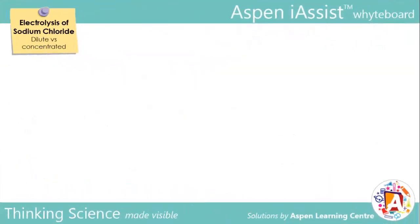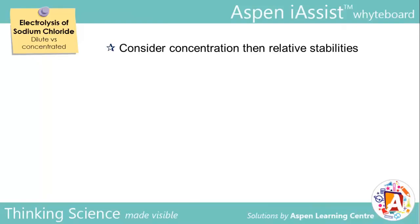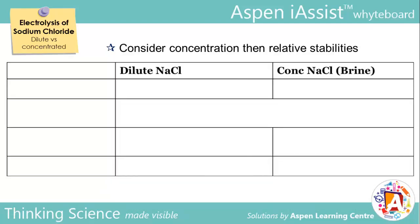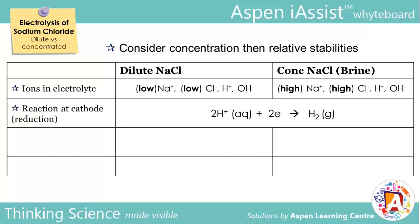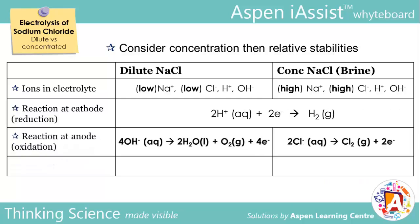In conclusion, for anions, consider their relative concentrations in the electrolyte before comparing their relative stabilities to decide which ion is selectively discharged. You need to be aware of the differences between the electrolysis of dilute versus concentrated sodium chloride solution. Both have the same species of ions in the electrolytes, but the concentration of Na⁺ and Cl⁻ ions in brine is much higher. At the cathodes, the same reduction reaction occurs. At the anodes, different oxidation reactions occur, and the products formed also differ, with the electrolysis of brine producing chlorine gas and sodium hydroxide.